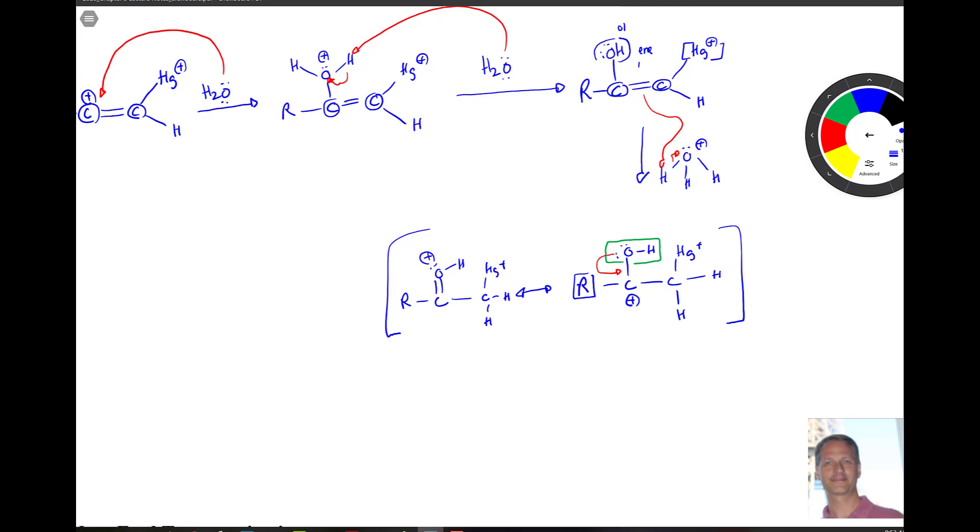Now we're one step away from the next intermediate and then we'll see this keto-enol tautomerism down below. Last step here. We have water present in solution. What happens is this mercury here just kind of plops off. So it comes down and we form a double bond here. And then we pull up those electrons up to our oxygen again.